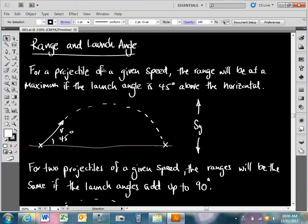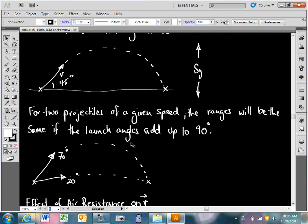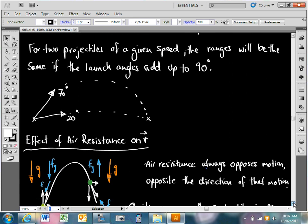Last lesson we looked at range and launch angle. We looked at launch angle being optimum at 45 degrees, and that 45 degrees was important for uni-level projection to give us maximum range. Bi-level projections are different of course - the projectile has further to fall through. We also looked at two projectiles of the same speed. As long as the angles at which they are launched add up to 90 degrees respectively, they will have the same range.